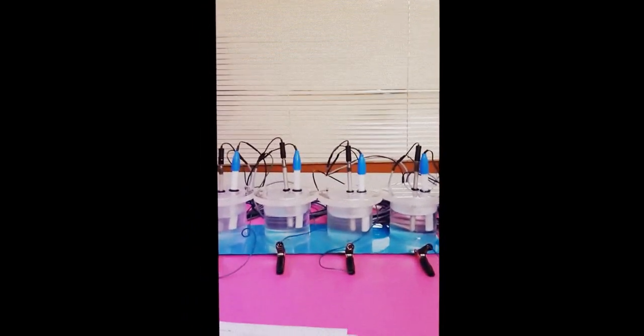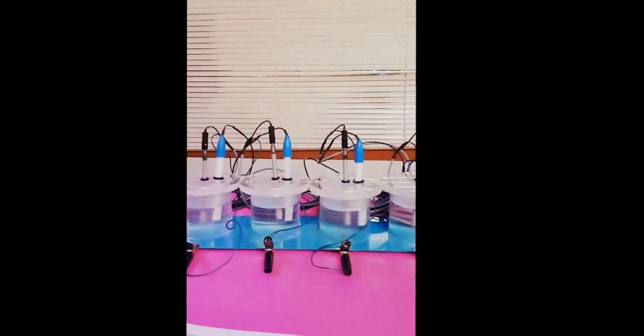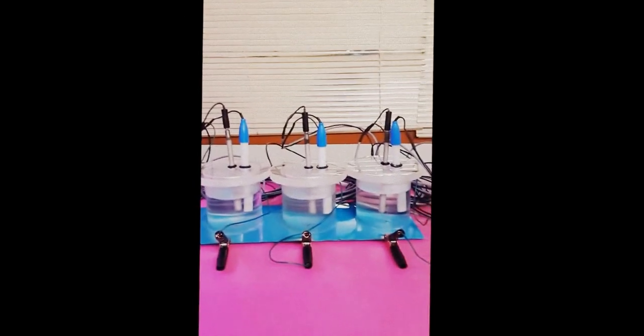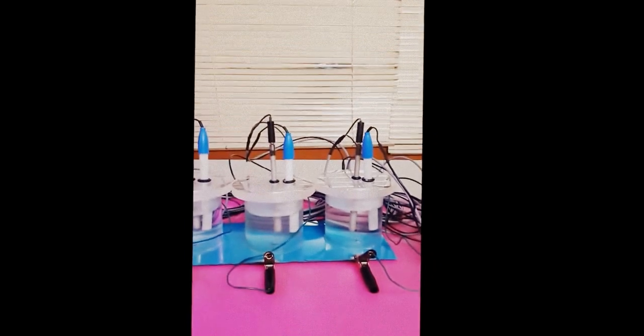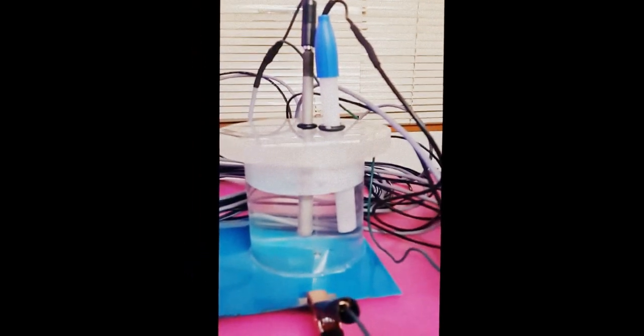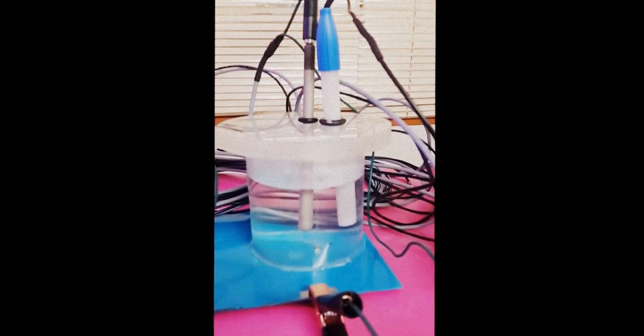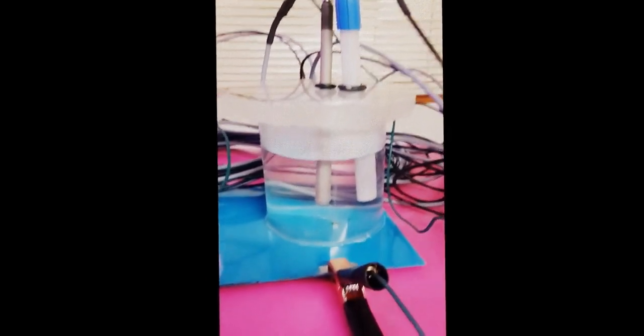These are the test cups or electrolytic cells where all 4 test vessels are engaged for testing. This shows the reference electrode, working electrode, and the clamps.